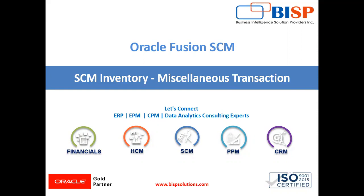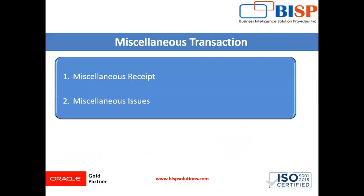Let's discuss one business scenario. Suppose the actual quantity in our inventory is more than the on-hand quantity in the Oracle Fusion system. For example, in our system we have 500 quantity, but in our actual physical inventory we have 1000 quantity. In this case we need to increase the on-hand quantity in the system without any purchasing or manufacturing item. We have two types of transaction: miscellaneous receipt and miscellaneous issues.